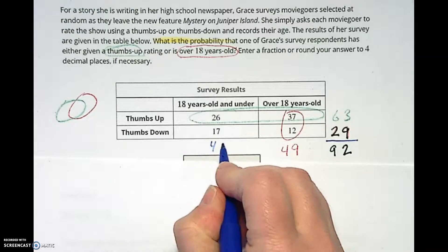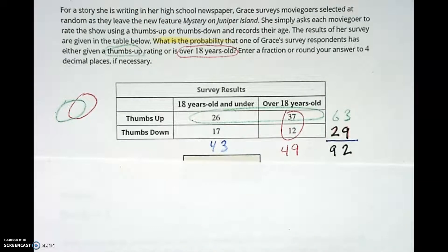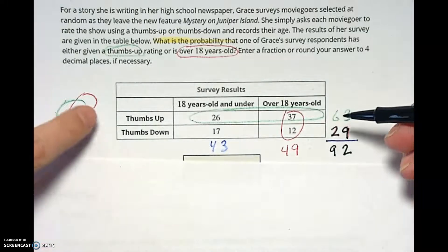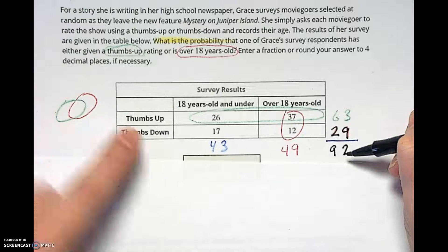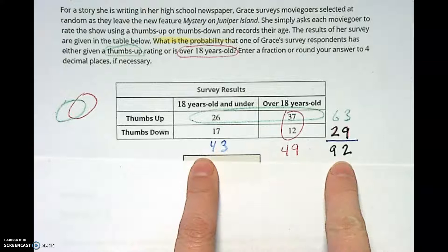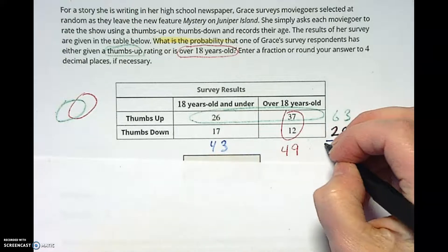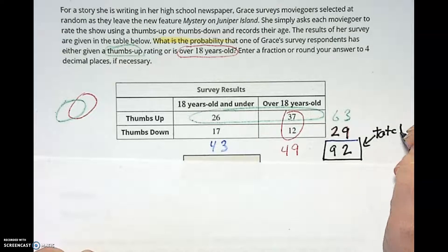And the reason I'm doing all of these little totals over here is because, especially if you're taking a paper test or any kind of test, you want to make sure you didn't screw anything up. And the number of thumbs up and thumbs down people should be all the people, which is 92, which should be the same as 18 and under and over 18 when you add those up. It should still give you that same total of 92, the total number of people.